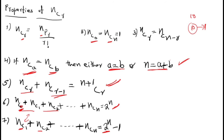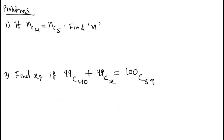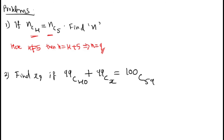First problem: NC4 = NC5, find N. Since 4 is not equal to 5, we use the condition NCa = NCb with a ≠ b, which means N = a + b. So N = 4 + 5 = 9.